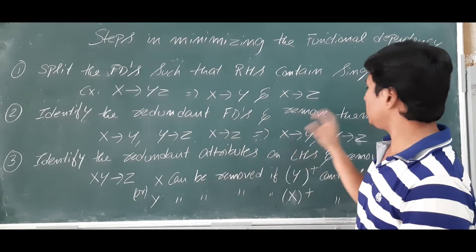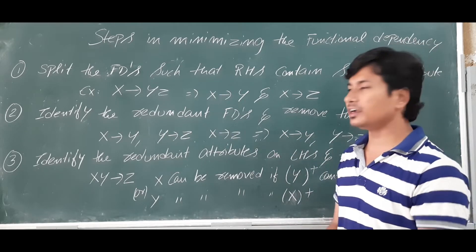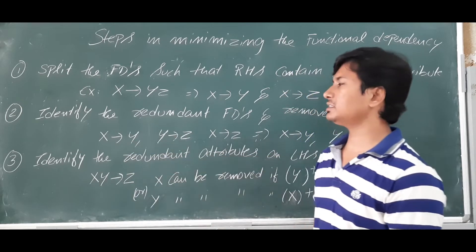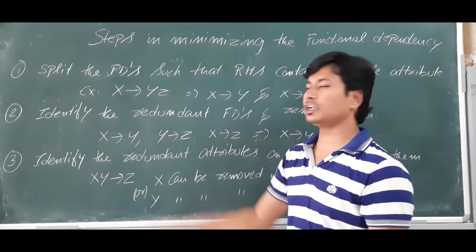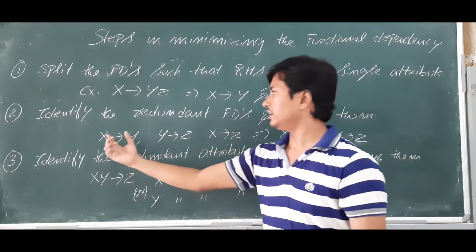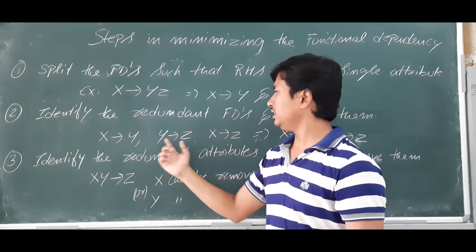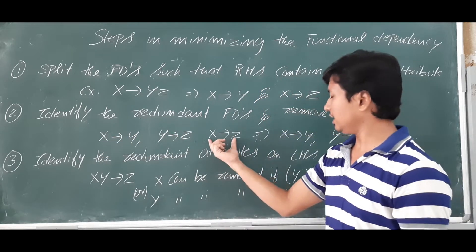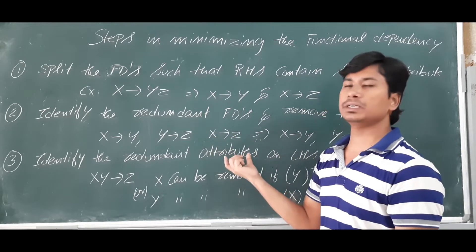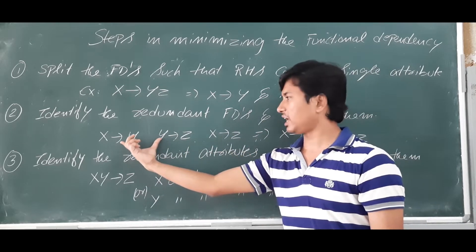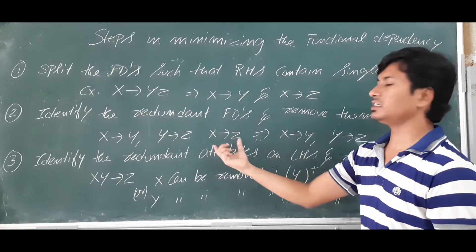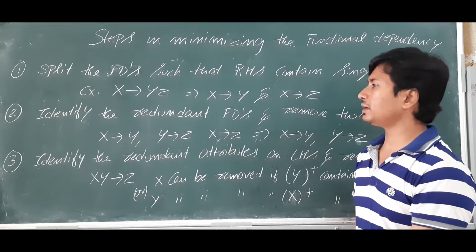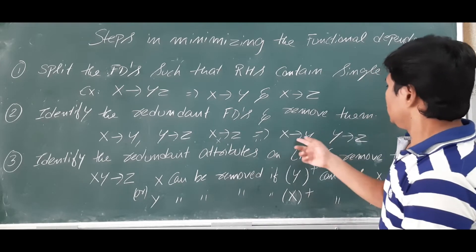The second step is identifying the redundant functional dependencies and removing them. If X determines Y and Y determines Z, then X can determine Z indirectly. So if we are also given X determines Z explicitly, we don't need that extra functional dependency because it can be derived from the other two.